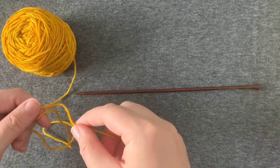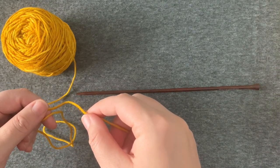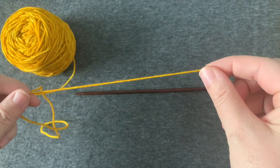Here's how to work a long tail cast-on. The first thing you'll need is a long tail, about three times the length of your cast-on.